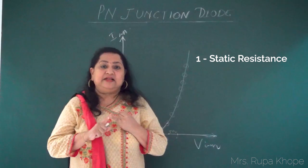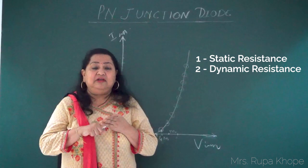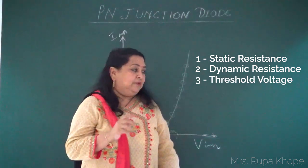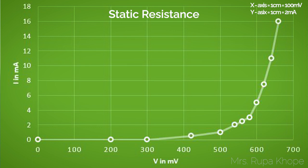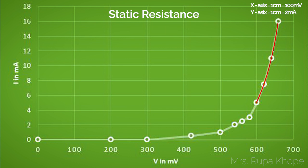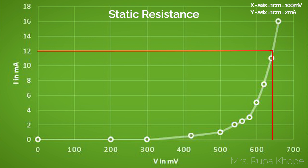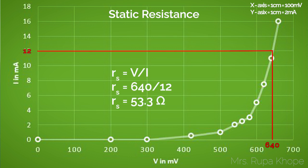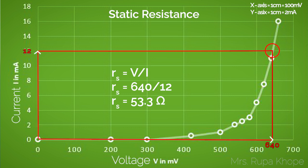Now we need to find three things: static resistance, dynamic resistance, and threshold voltage. For static resistance, look at the graph — it does not show a directly proportional relation between current and voltage. Initially current is zero, then slowly increases with a curve, then shoots up into a linear region. Static resistance Rs equals voltage divided by current, and you must find it at a chosen point in the linear region.